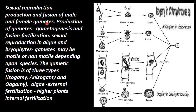Sexual reproduction requires two parents. The production of gametes is called gametogenesis, and this is a pre-fertilization event. The fusion of gametes is called fertilization.